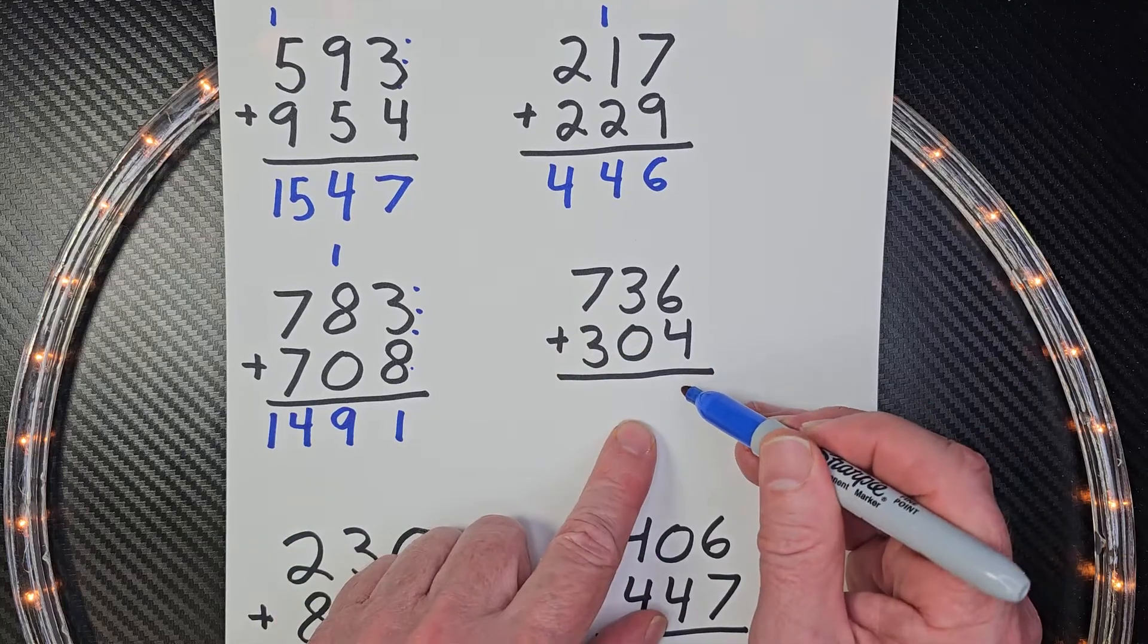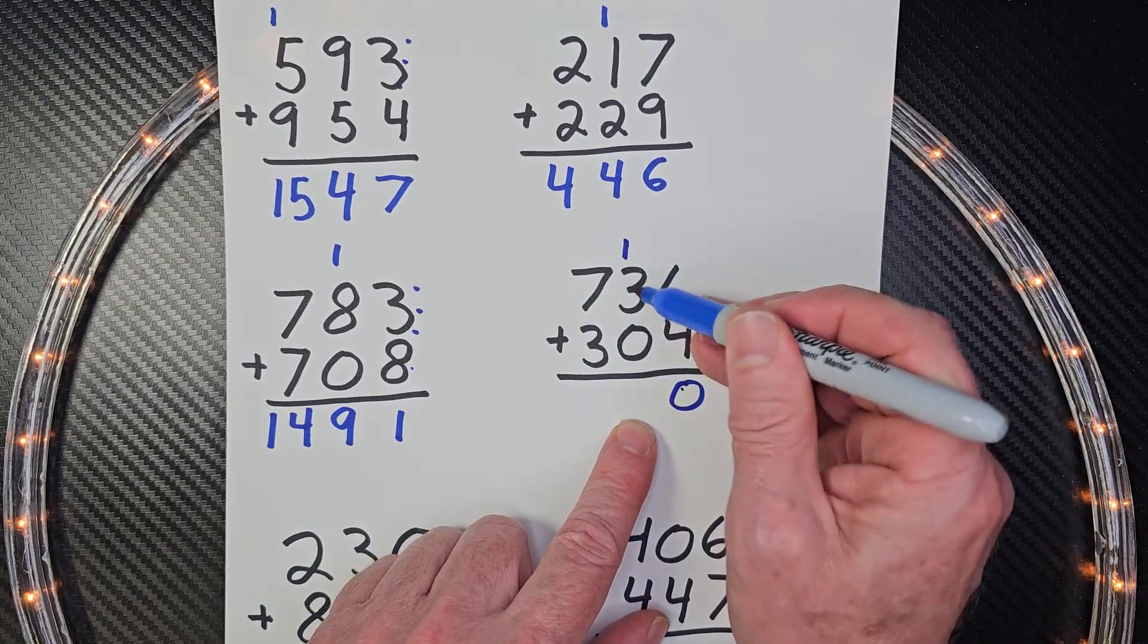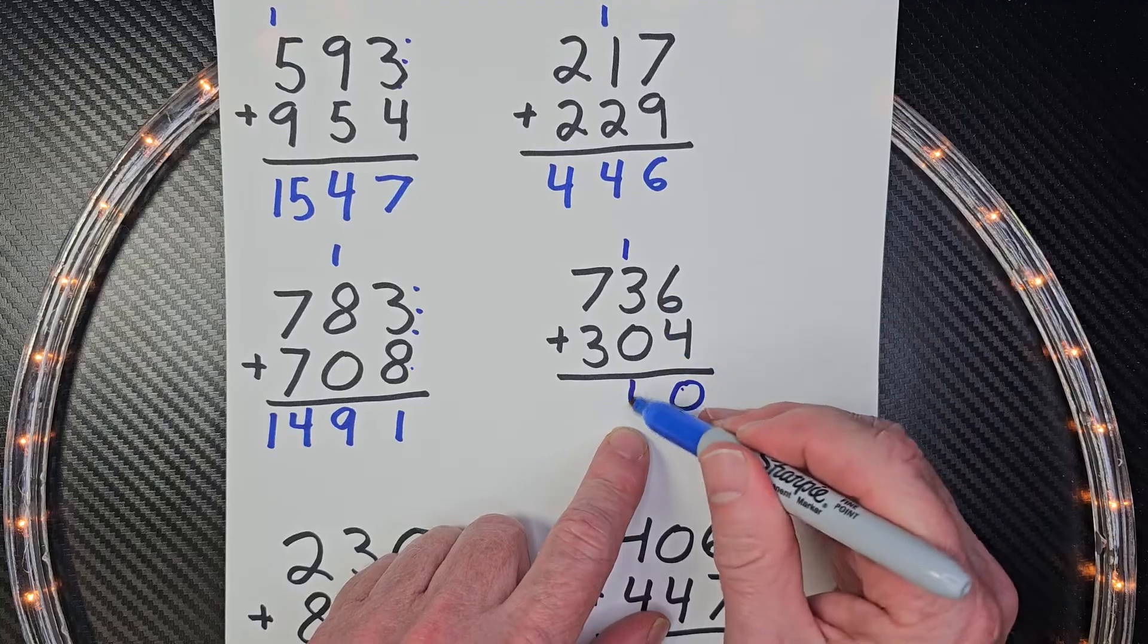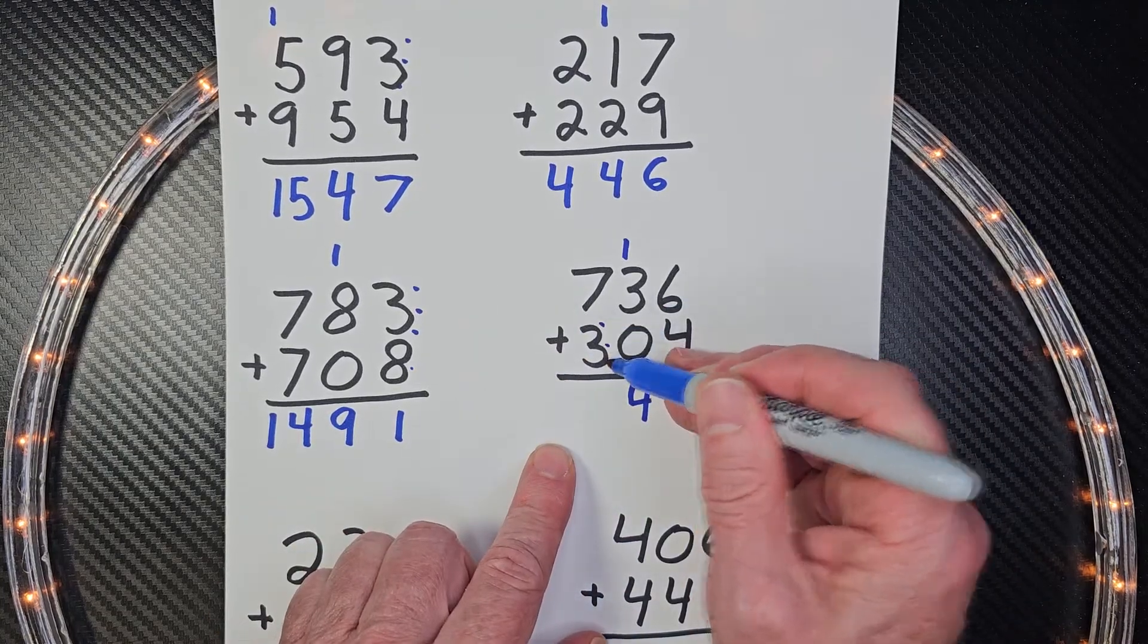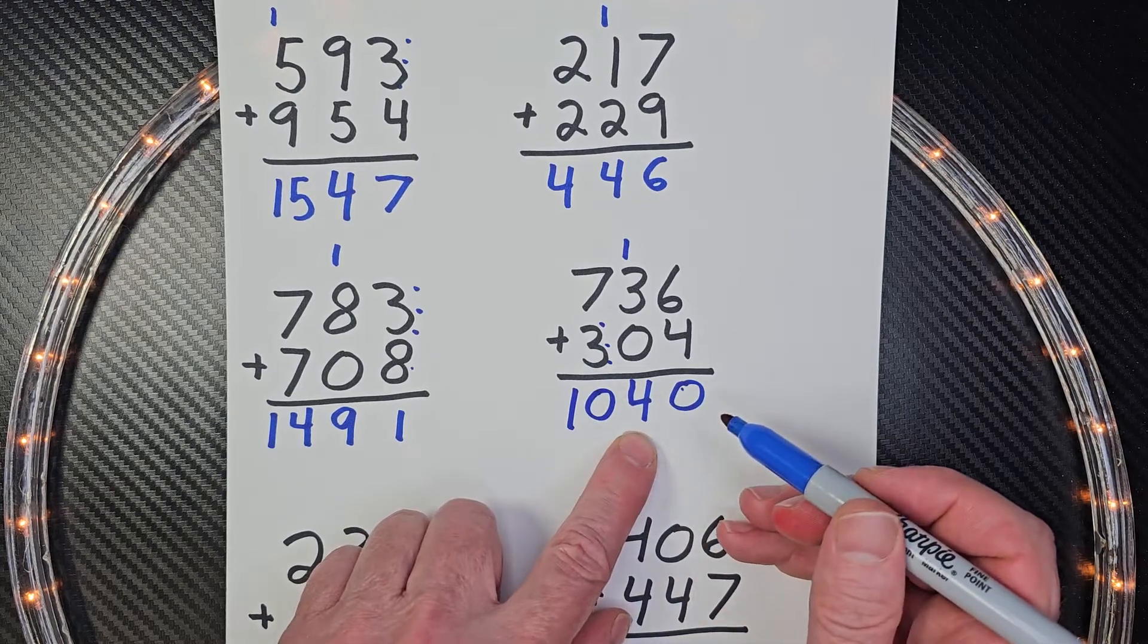Six plus four, ten. So I put the one up here. Three plus one is four, and then seven plus three: seven, eight, nine, ten. The answer is one thousand forty.